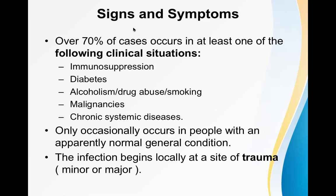Now let's talk about the signs and symptoms of necrotizing fasciitis. Over 70 percent of cases occur in at least one of the following clinical situations — predisposing factors like immunosuppressed conditions. Examples of immunocompromised conditions include pregnancy and use of immunosuppressive drugs.